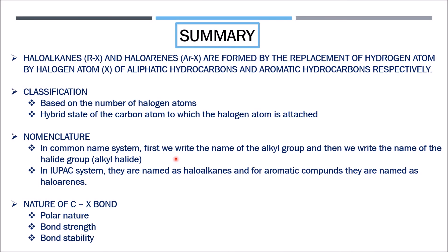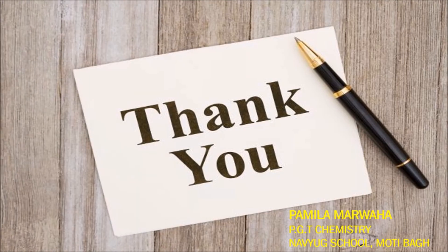To summarize: haloalkanes and haloarenes are formed by replacement of hydrogen by a halogen atom in aliphatic and aromatic hydrocarbons respectively. We learned classification based on the number of halogen atoms and the hybridization of the carbon to which the halogen is attached. We covered nomenclature — common name 'alkyl halide' and IUPAC name 'haloalkane/haloarene' — and the nature of the C-X bond, which is polar, along with its bond strength and stability. Thank you very much.